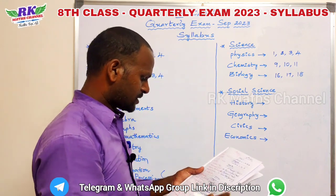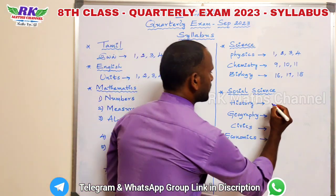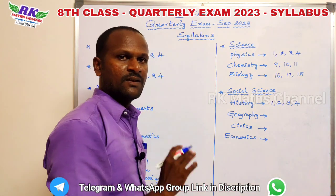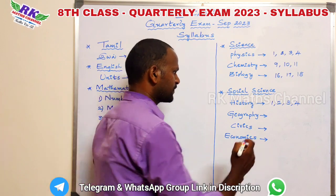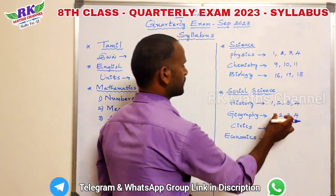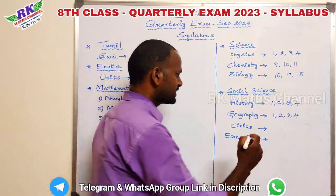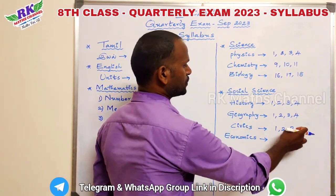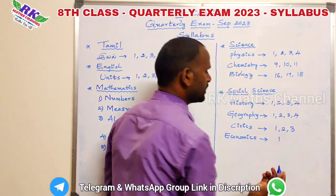For Social Science, there is History, Geography, Civics, and Economics. History covers the first 4 units. Geography covers 4 units. Civics covers the first 3 units — units 1, 2, and 3. Economics covers 1 unit, and that one unit is full.